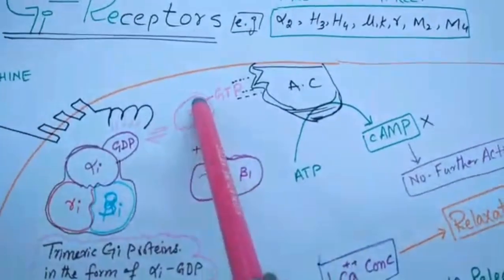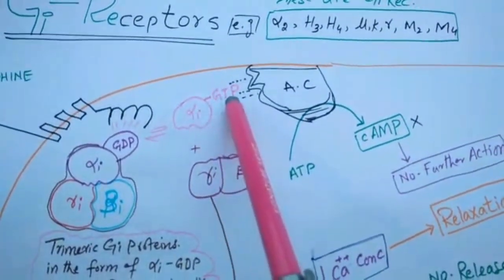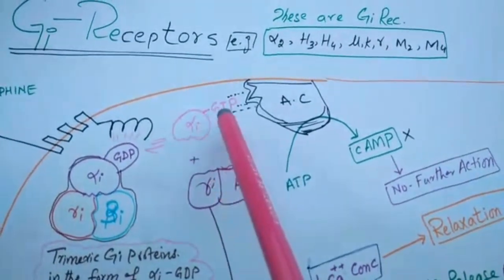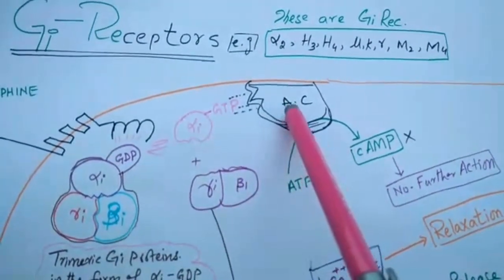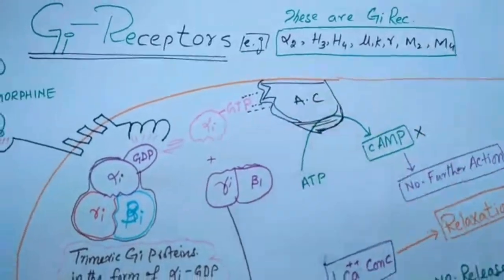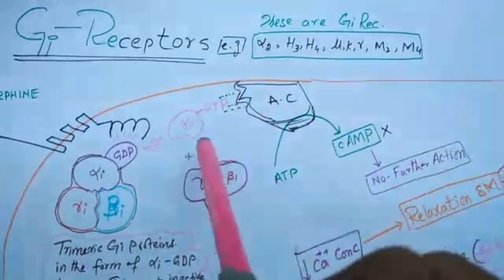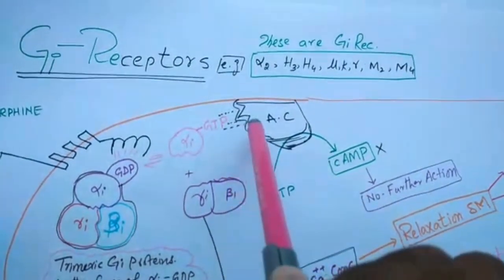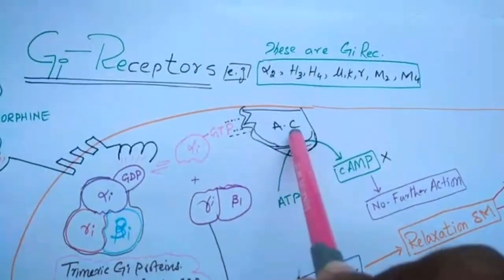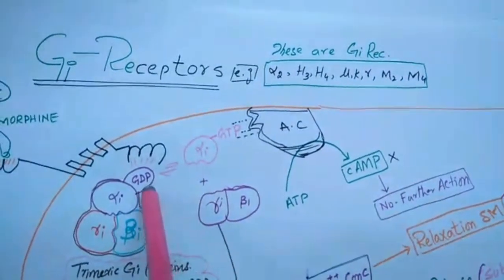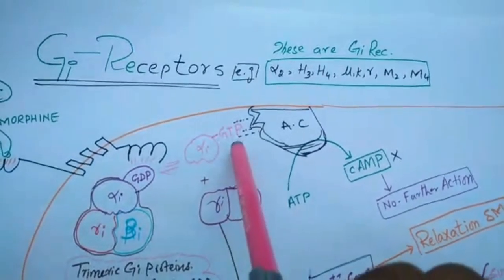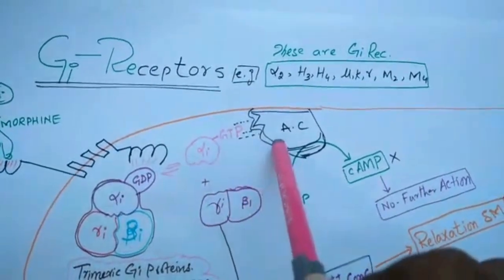This activated alpha-i GTP then interacts with adenylyl cyclase, which is a membrane-bound enzyme. This alpha-i phosphorylates this AC and it shall become again alpha-i GDP when it loses its one phosphate group. Again, it binds with this dimer and forms this trimer.